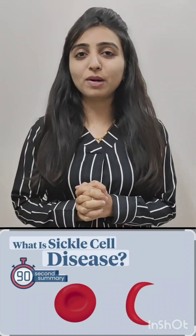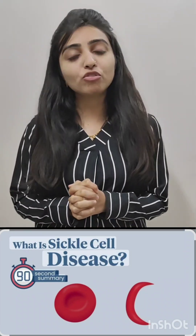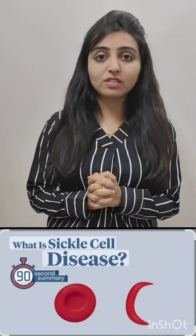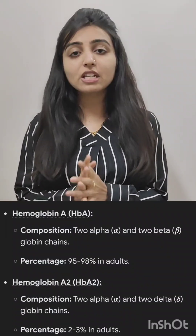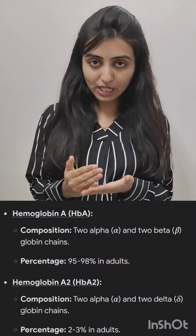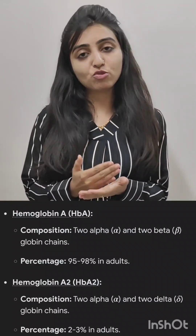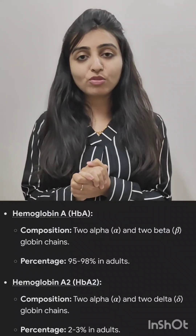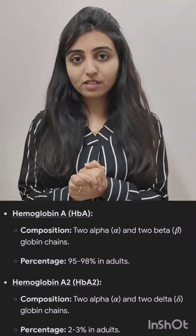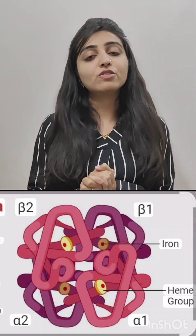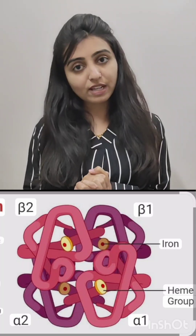Today we will learn about sickle cell anemia. For that, we first need to learn the normal structure of hemoglobin. Adult hemoglobin consists of HbA, HbA2, and HbF. Most of the hemoglobin — 95 to 98% — is HbA.